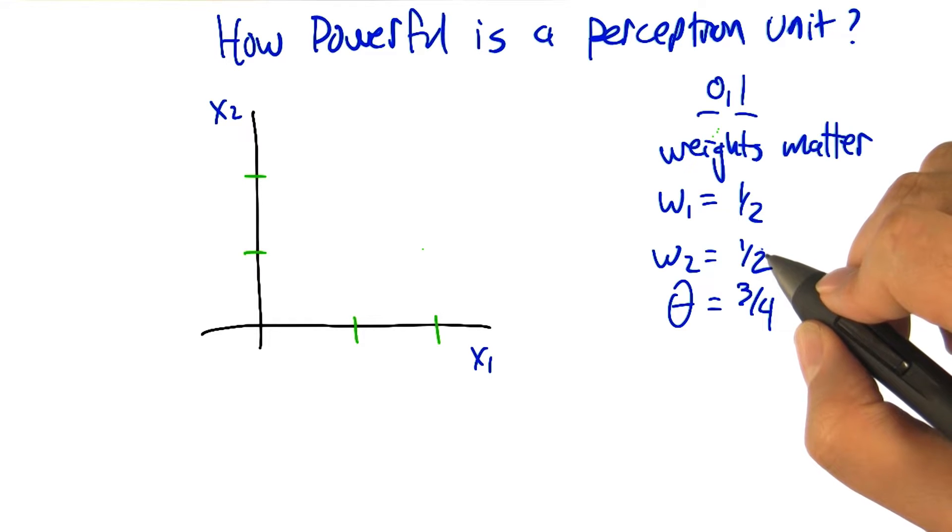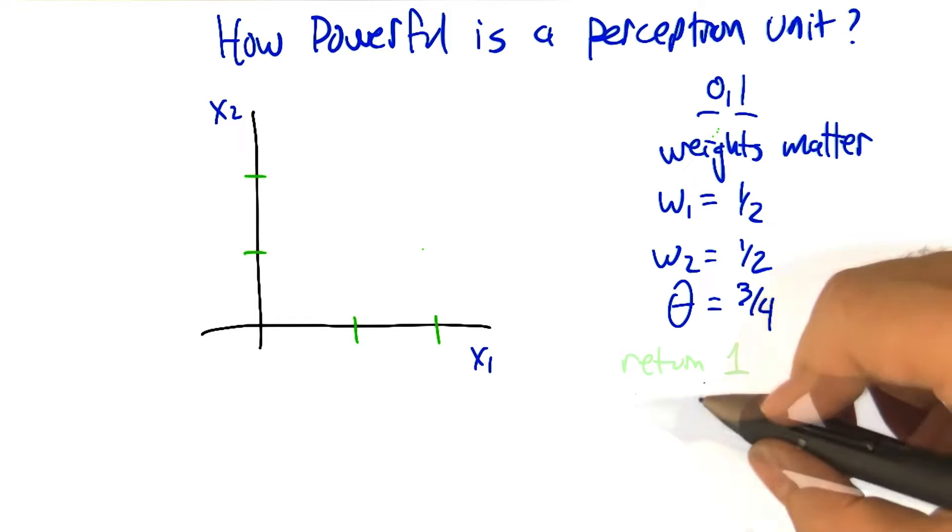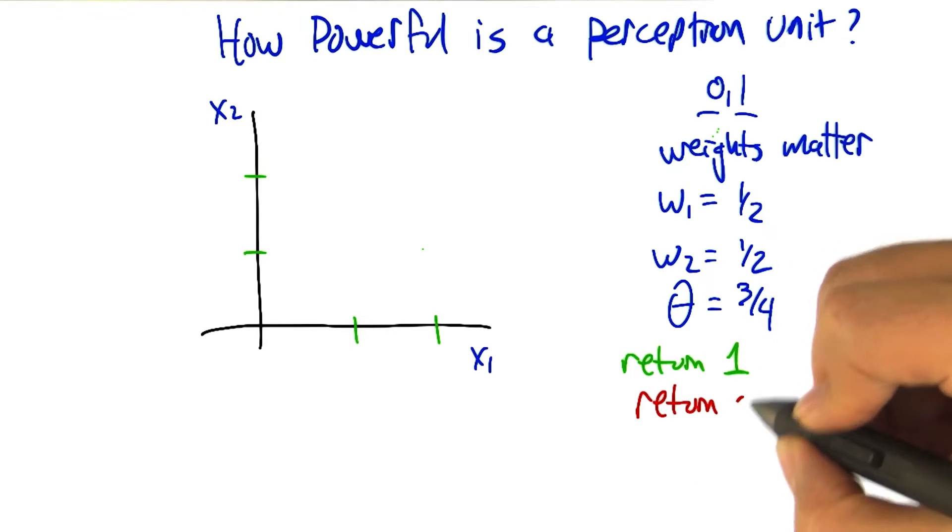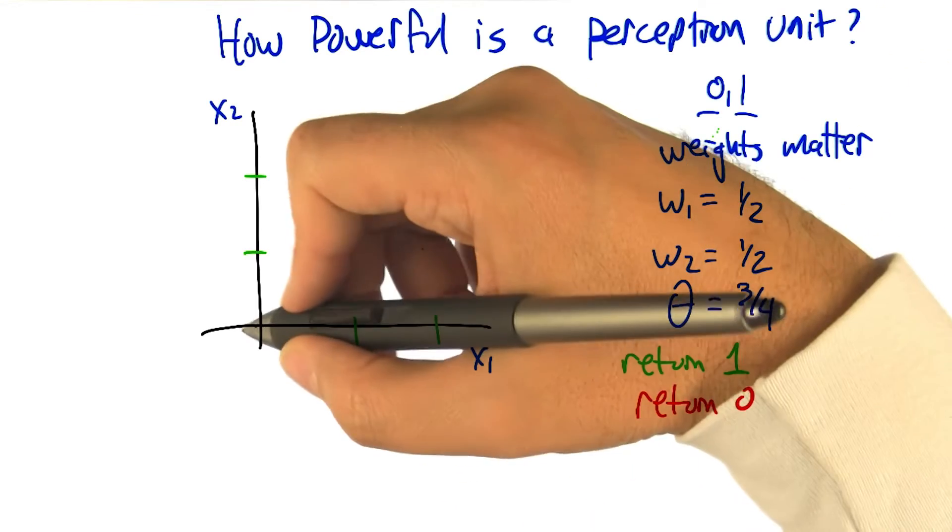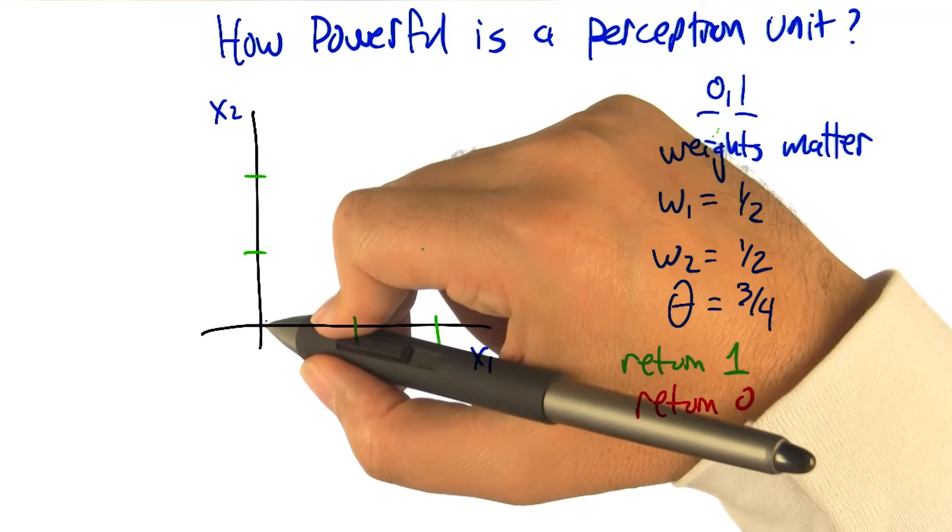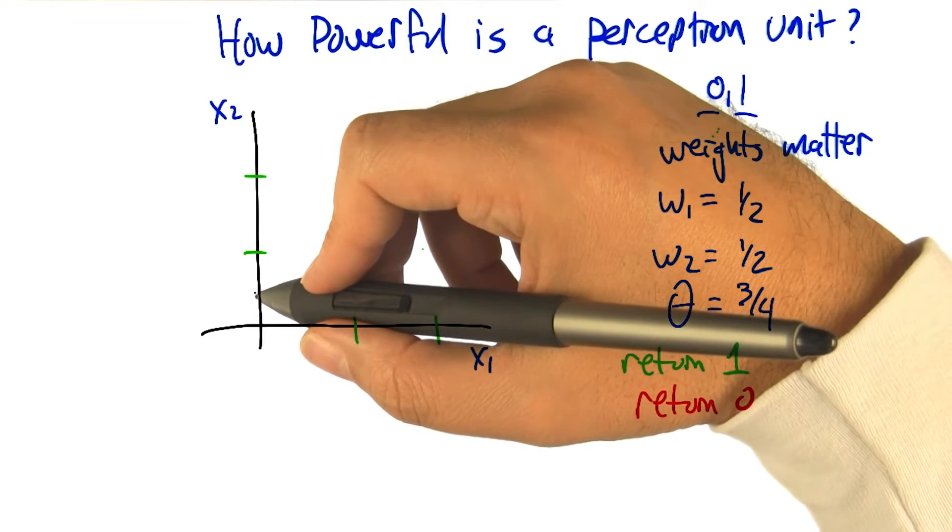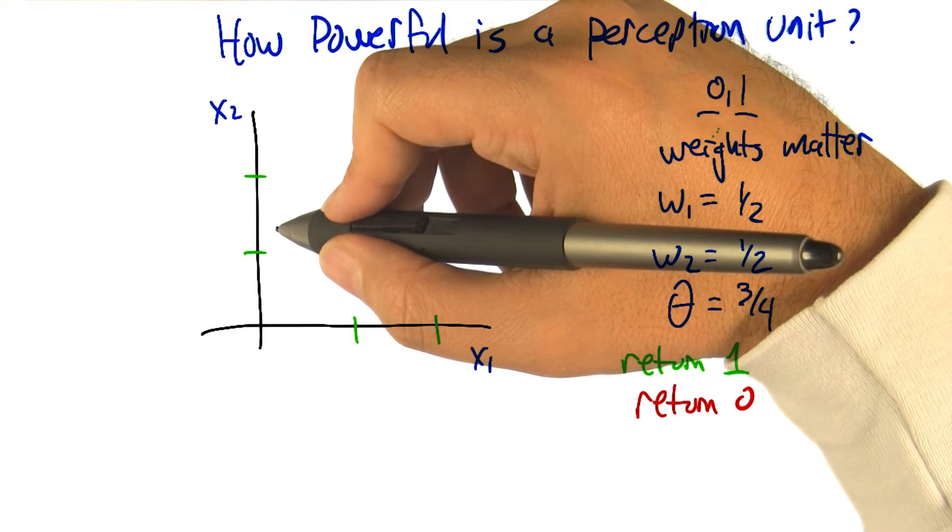Now what we want to do is break up this space into where is it going to return 1 and where is it going to return 0. I think I know how to figure this out. There are two sort of extreme examples. Let's take a case where x1 is 0. So that's this y-axis. If x1 is 0, what value would x2 have to be in order to break a threshold of 3 quarters?